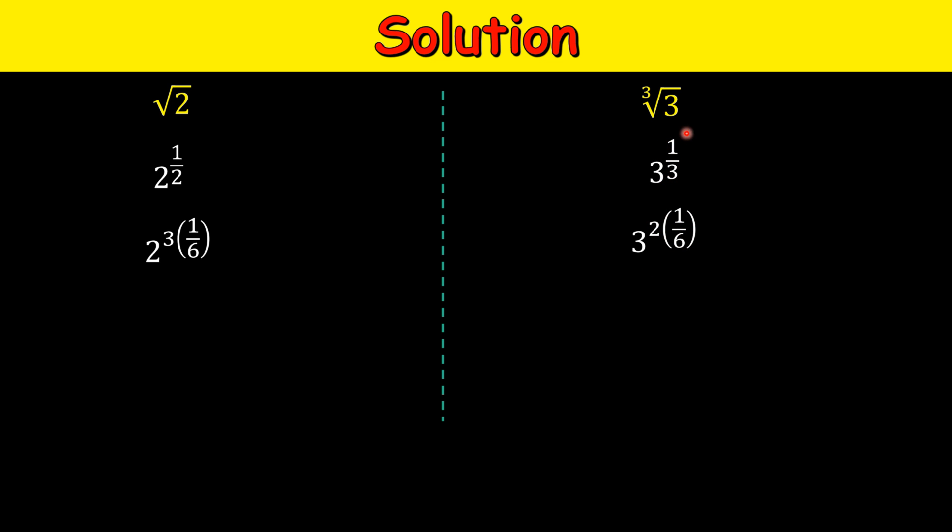I have not changed anything, just 1 by 3 here. Now if we have some number, let's say x raised to the power of a b, then we can write it as x raised to the power of a and whole power of b. So again here we can write this as 2 raised to the power of 3 and the complete thing raised to the power of 1 over 6. Similarly, here we can write as 3 squared to the power of 1 over 6.